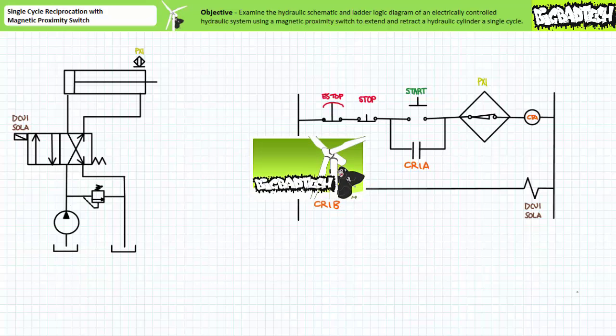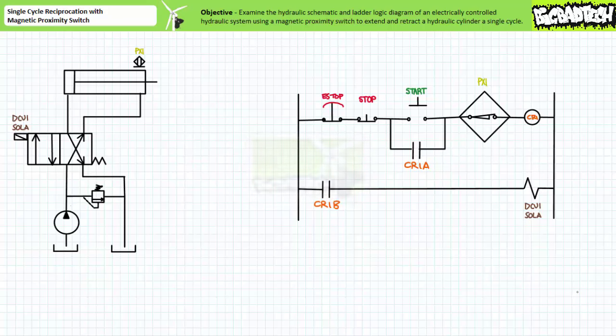This lecture is meant to be a continuation of the single cycle reciprocation with limit switch lecture available at the Big Bad Tech channel. If you haven't watched this lecture yet or only dimly recall its contents please take the time to do so now. For the most part everything about the two systems is identical right down to the normally closed limit switch in our first rung.